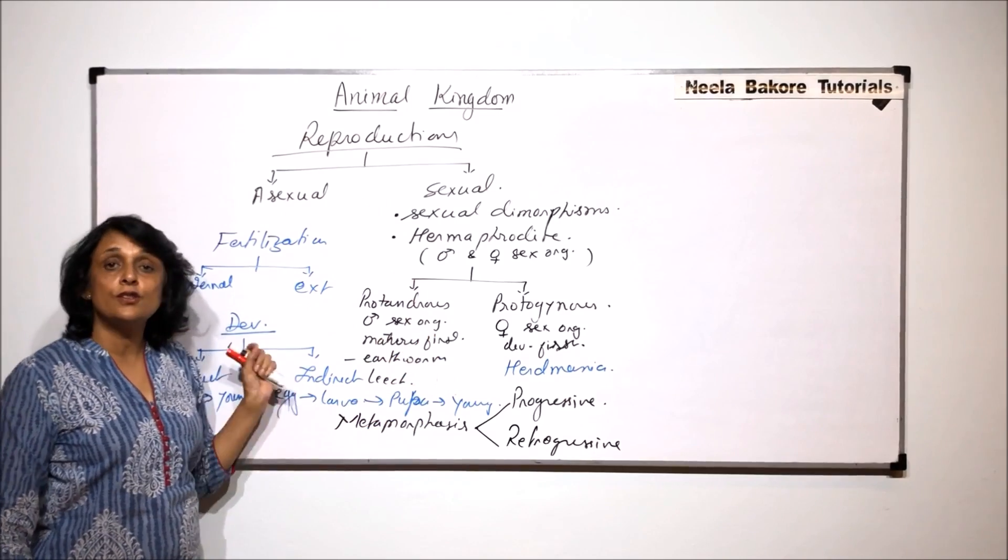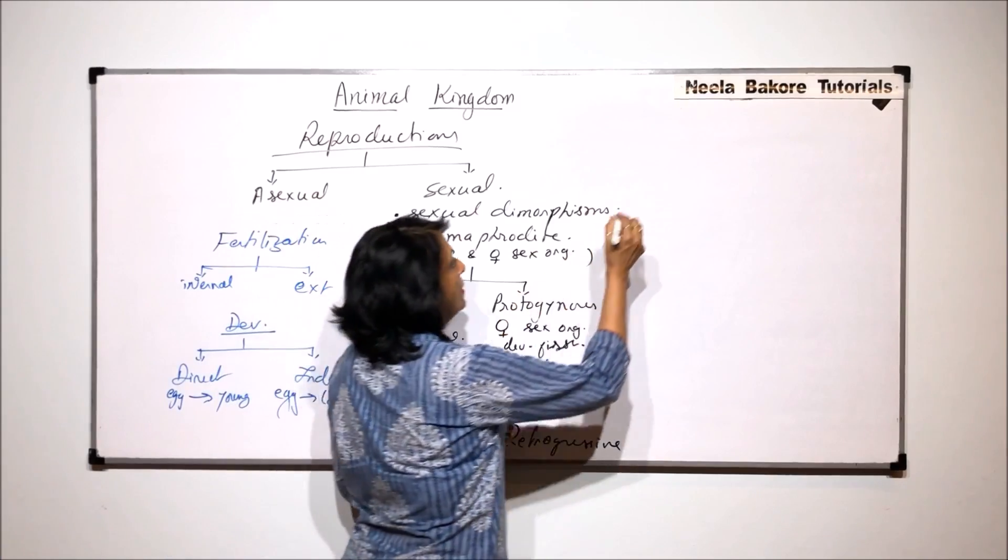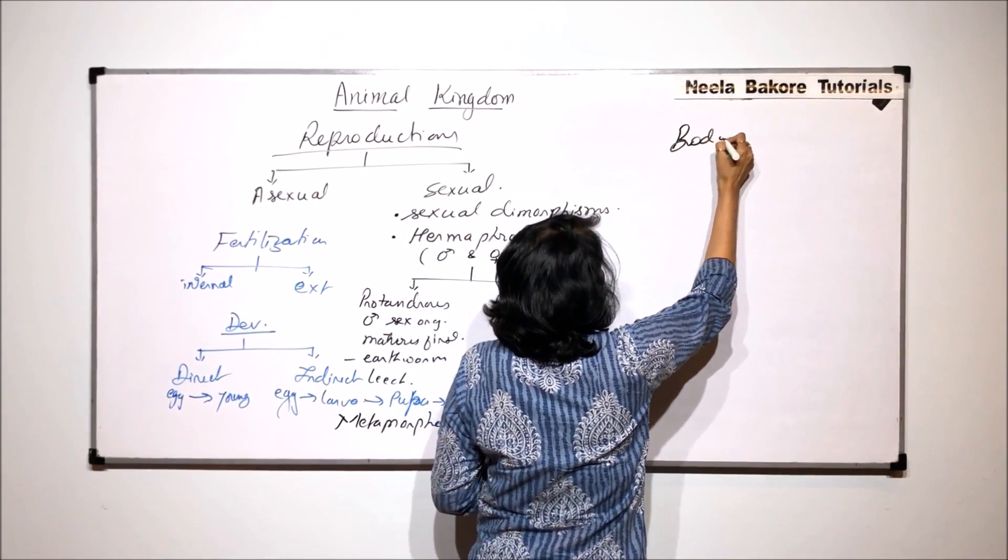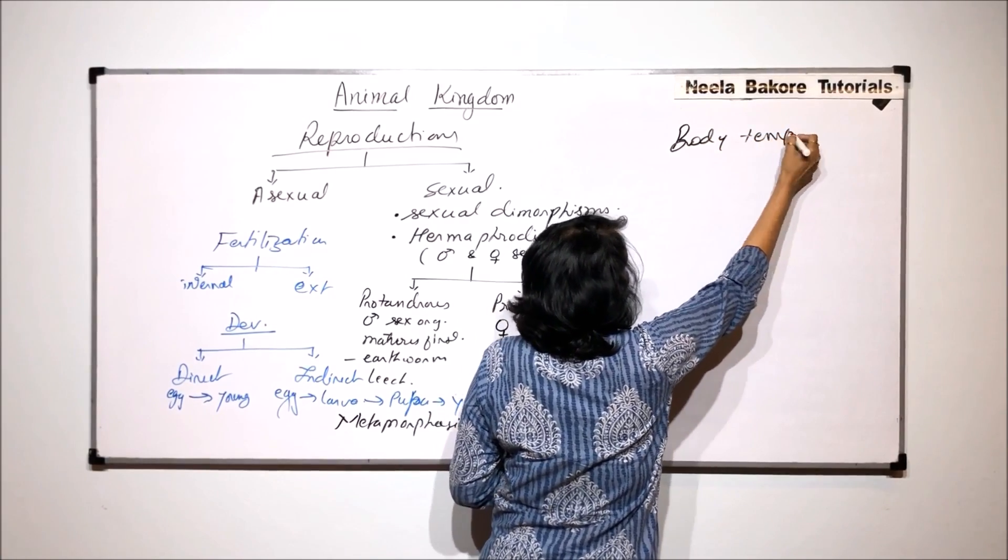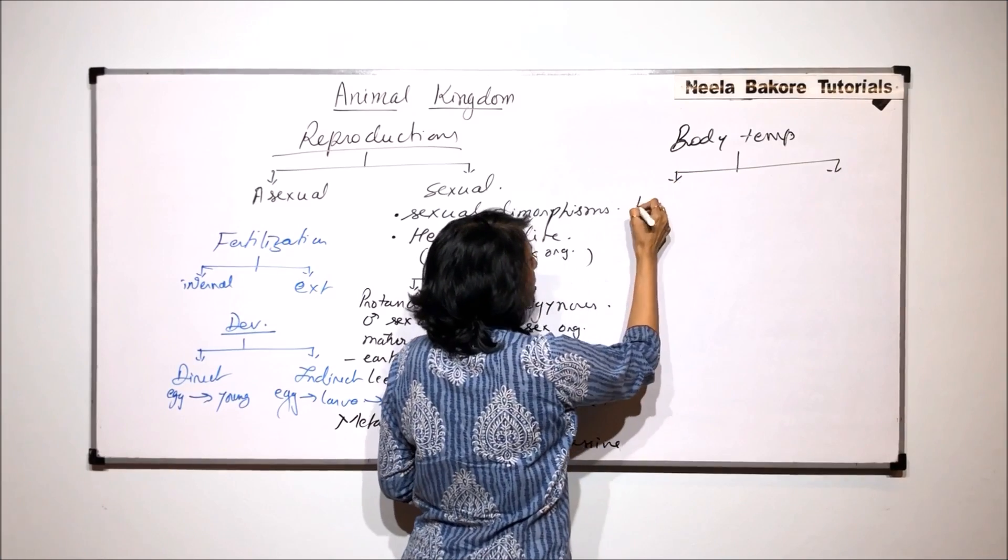So these are certain terms which we use when we talk about reproductive processes. Now let us talk about one more thing: body temperature. Animals can be classified as homeotherms.